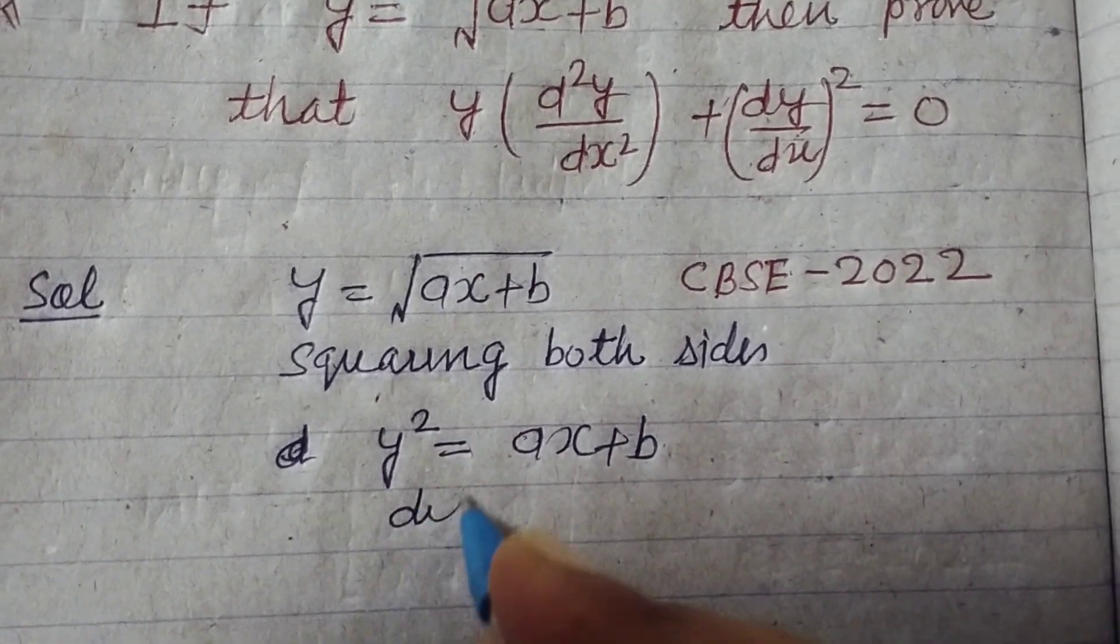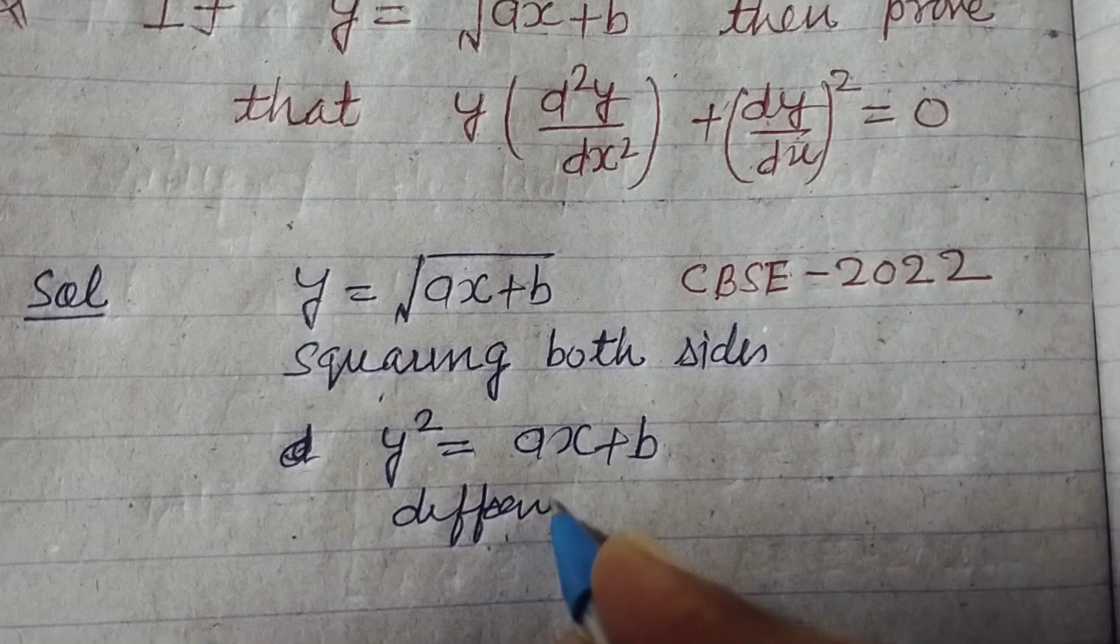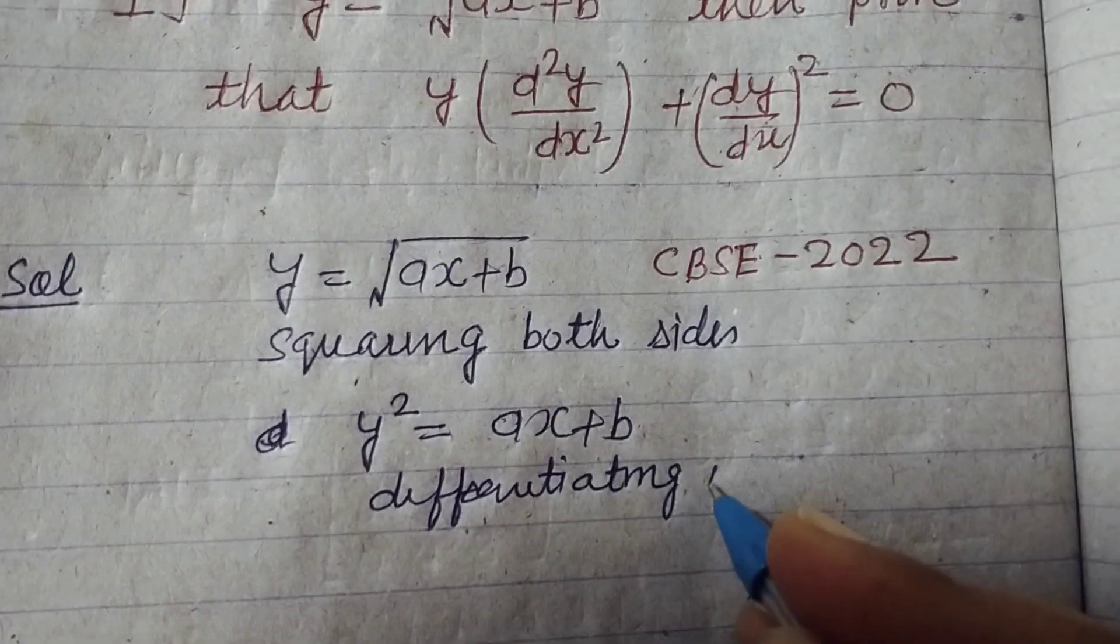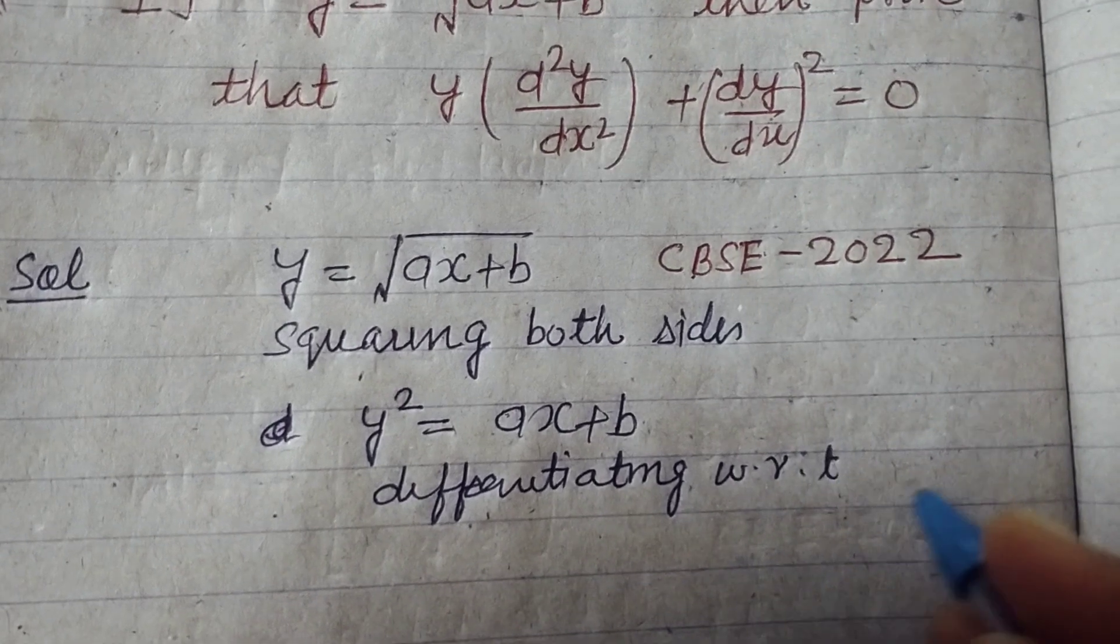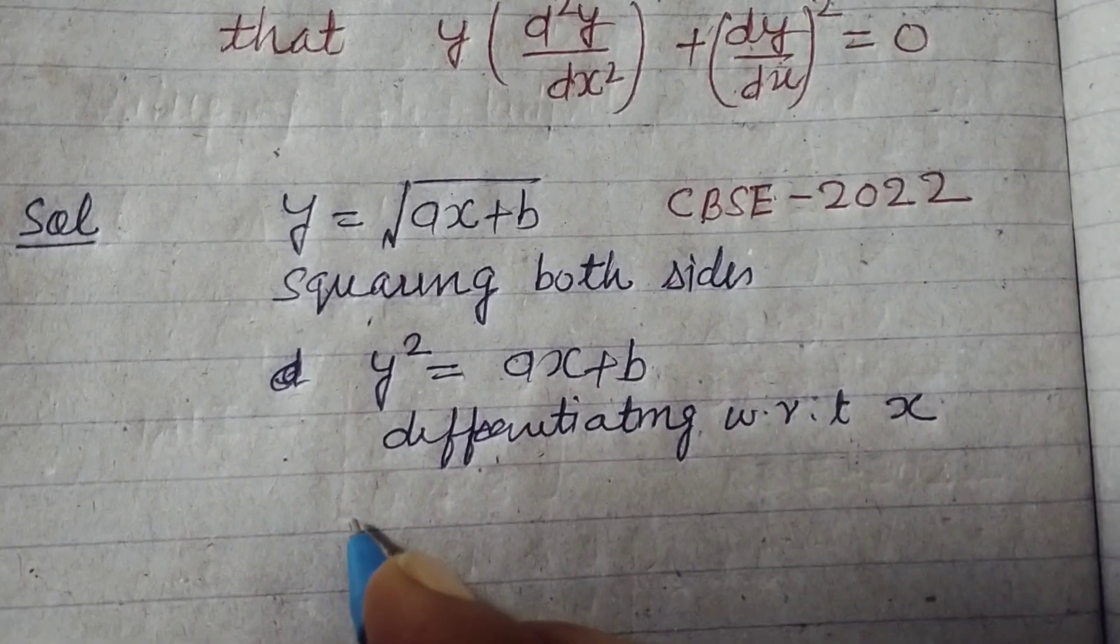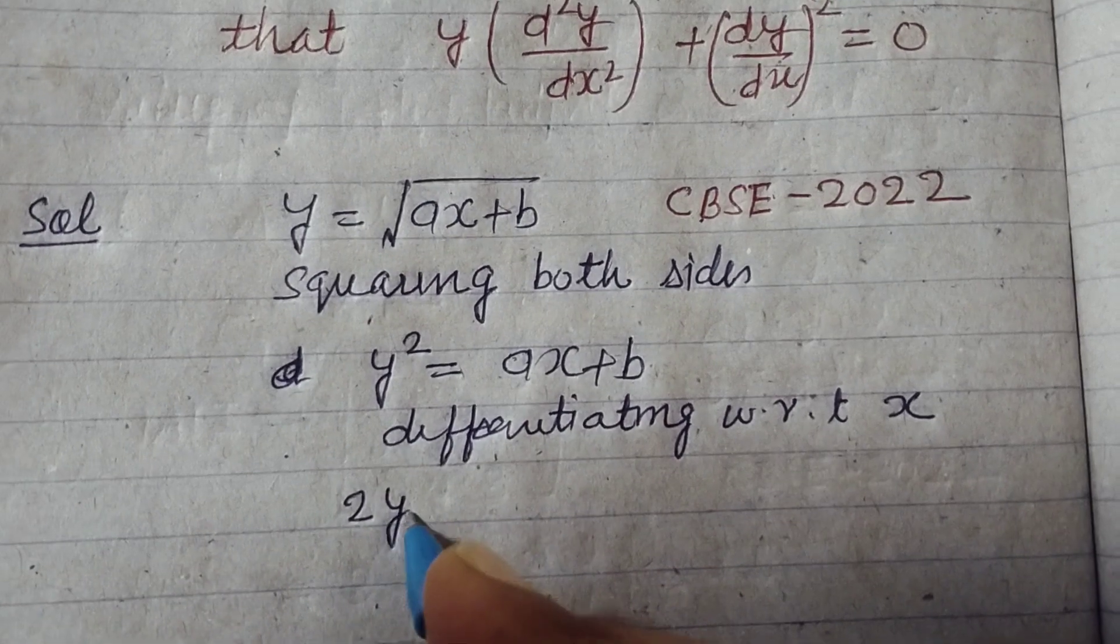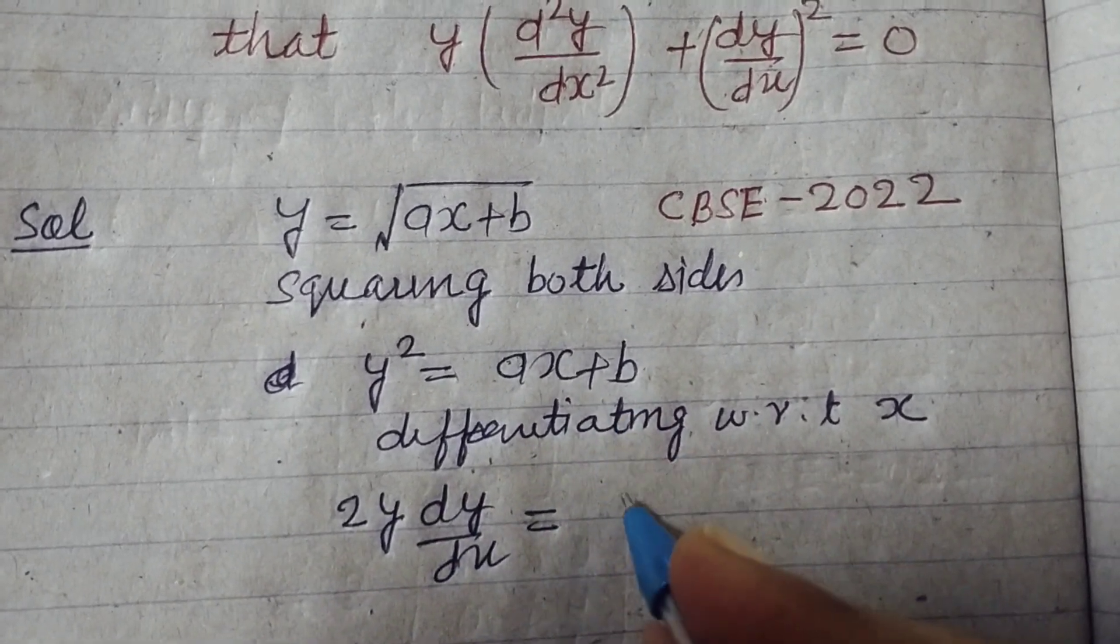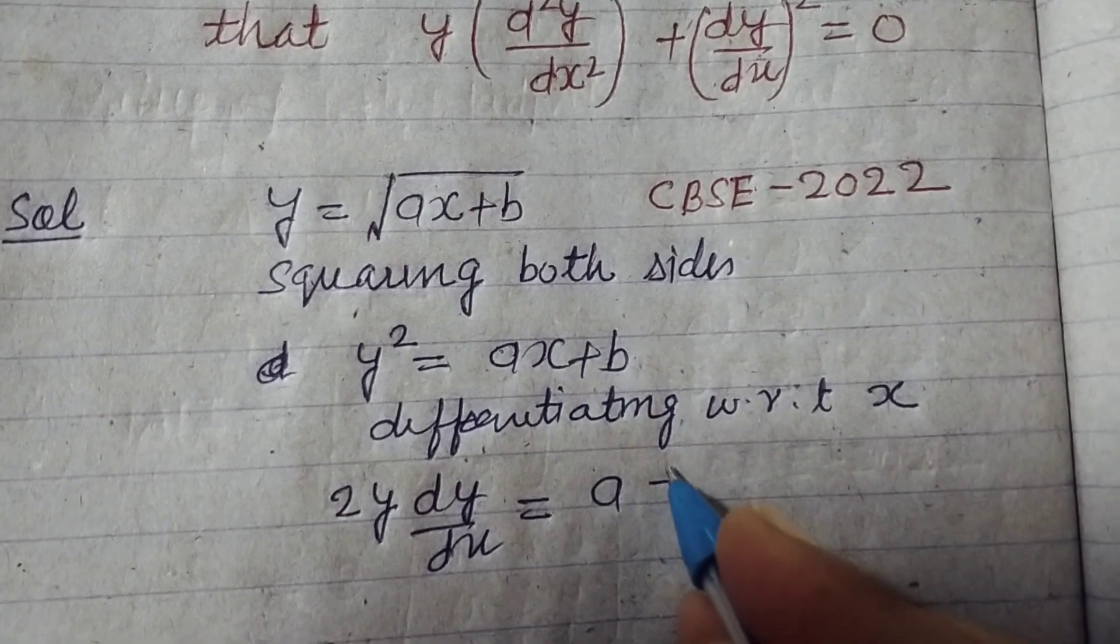Now differentiating with respect to x, 2y dy by dx equals a plus zero.